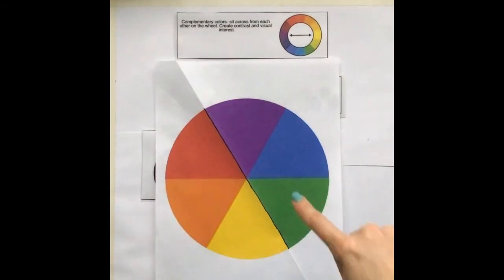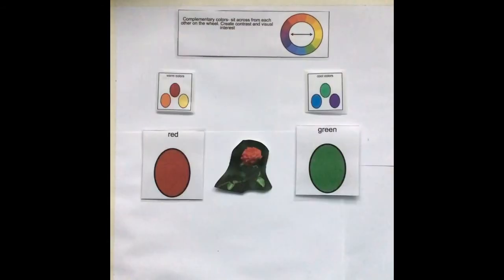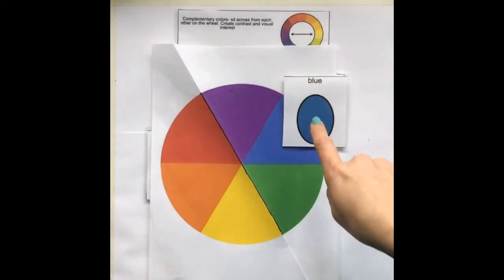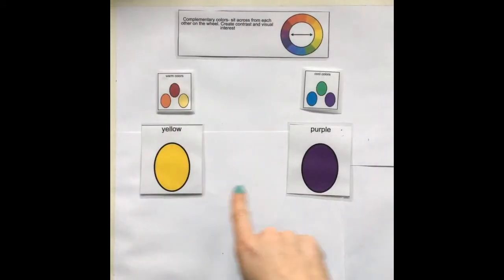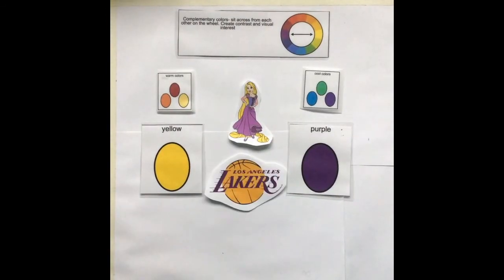So what have we learned? Red and green are complementary colors like this rose. Orange and blue are complementary colors like this Fanta logo and yellow and purple are complementary colors like Rapunzel or if you're a sports fan the Lakers.